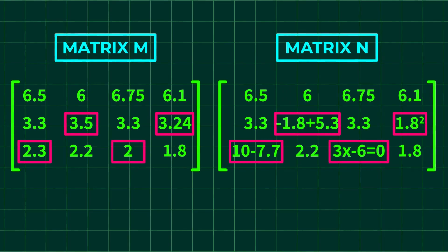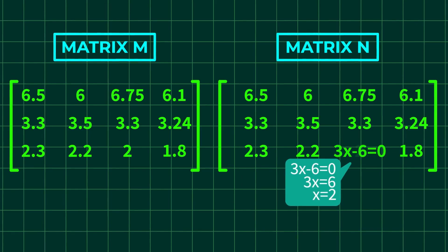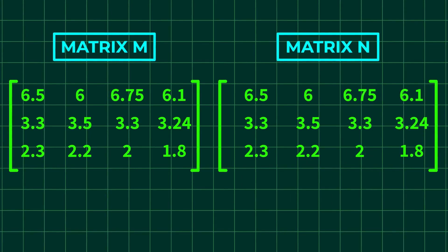In matrix N, some of its elements look different. But if we solve the operations first, we can clearly see that they have equal values. Hence, matrix M and N are equal matrices.